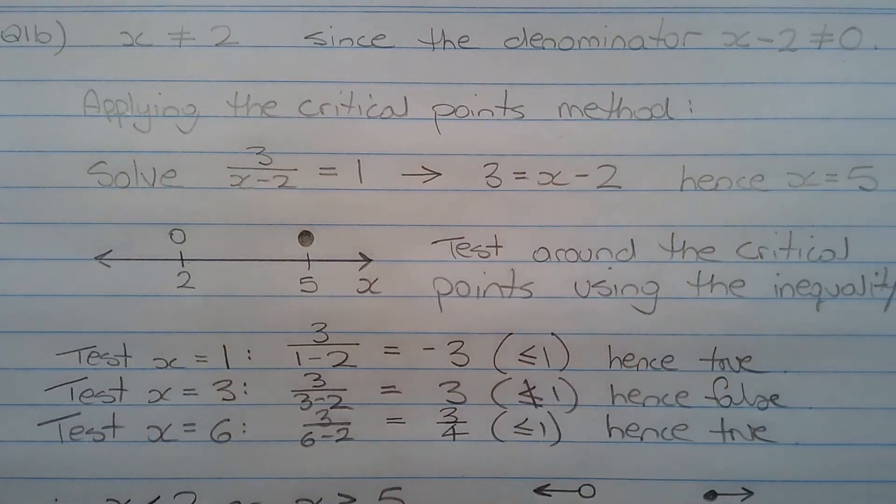Applying the critical points method, solve as an equation: 3 over x minus 2 equals 1. Multiplying both sides by x minus 2, the equation becomes 3 equals x minus 2. Solving for x by adding 2 to both sides, we get x equals 5.